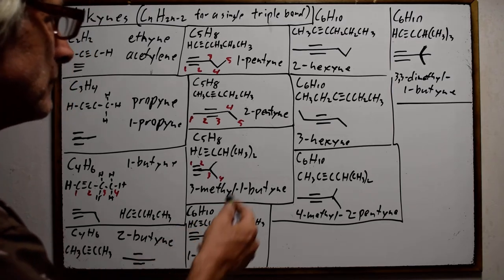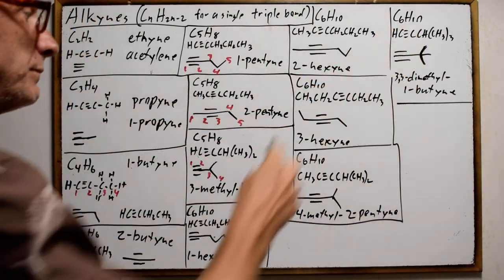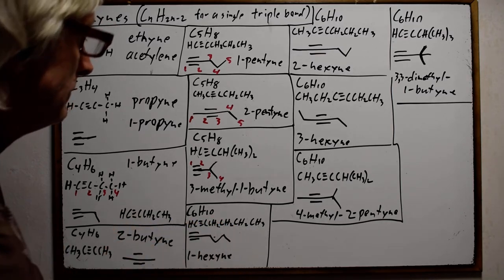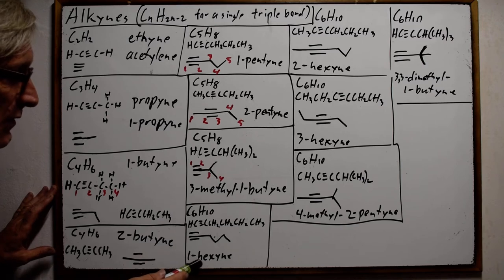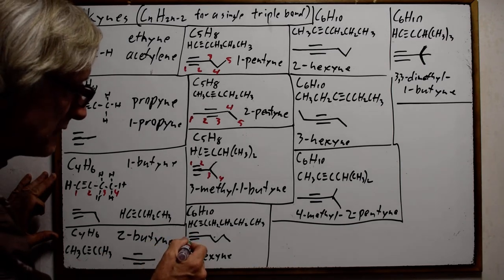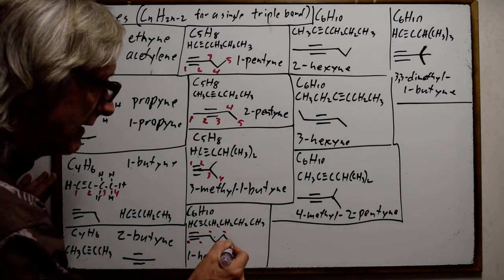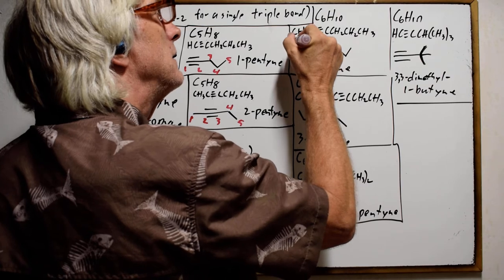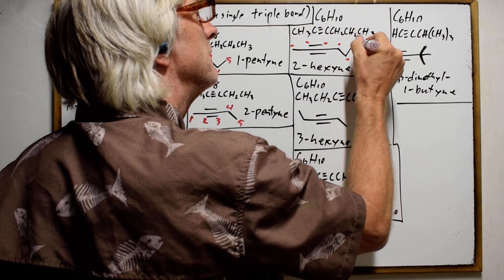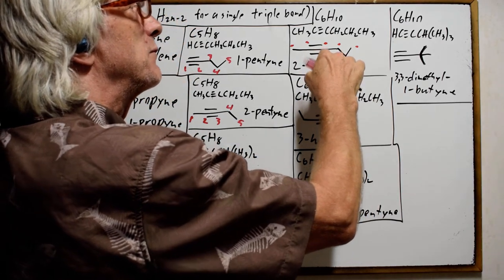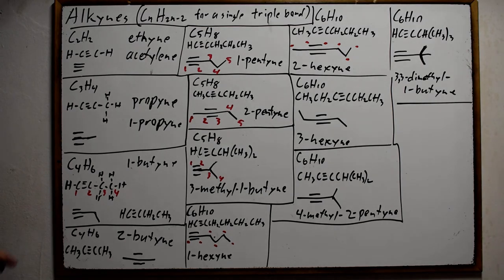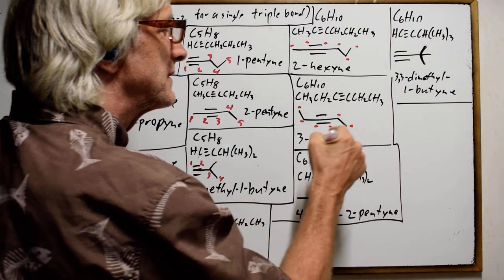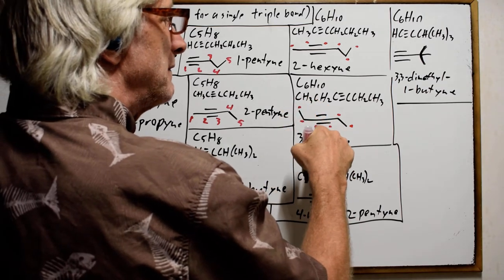Going up to six carbons, there are five isomers. Starting with a straight chain and the triple bond on the first carbon: that's 1-hexyne, with six carbons counted out. Next, a straight chain with the triple bond between carbons two and three: that's 2-hexyne. Then a straight chain with the triple bond between carbons three and four: that's 3-hexyne.